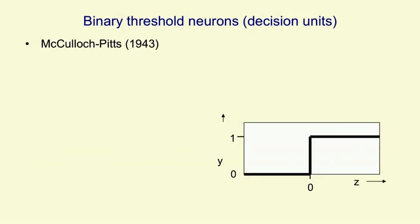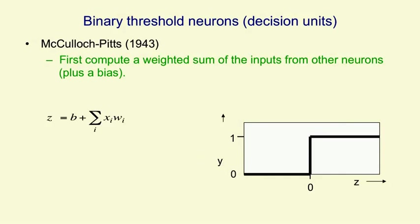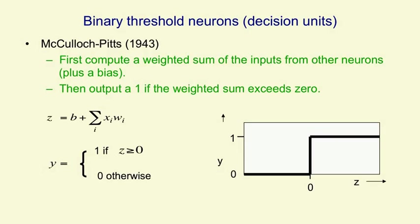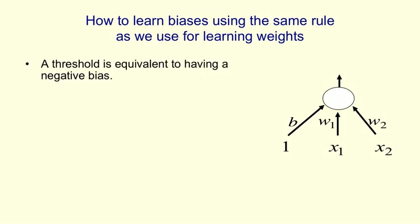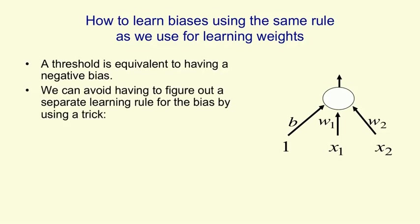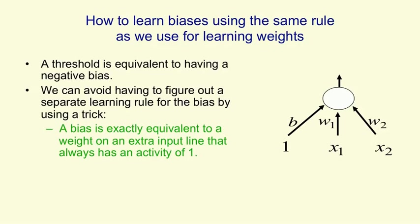The decision unit in a perceptron is a binary threshold neuron. It computes a weighted sum of the inputs it gets from other neurons, adds a bias to get its total input, and gives an output of 1 if that sum exceeds 0, and 0 otherwise. We don't need a separate learning rule for biases — we can treat biases just like weights by sticking a 1 on the front of every input vector and treating the bias as the weight on that extra feature. So the bias is just the negative of the threshold, and this trick means learning the bias is exactly equivalent to learning a weight on an extra input line.